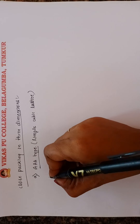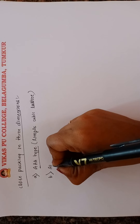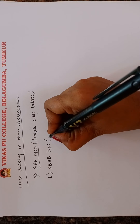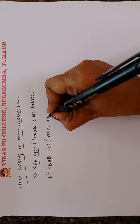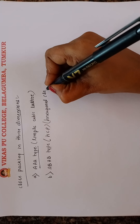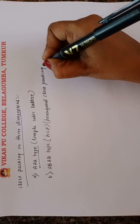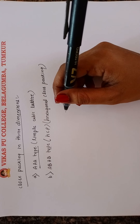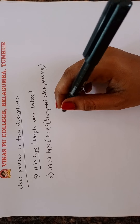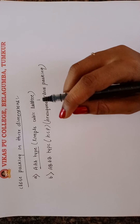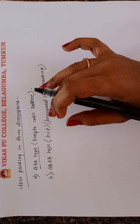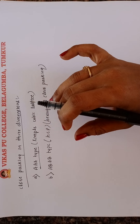The second type is the ABAB type, called hexagonal close packing or HCP. In the hexagonal close packing arrangement, each sphere remains in contact with six spheres in the same layer. Around each sphere, six triangular voids are marked alternately as type 1 and type 2.